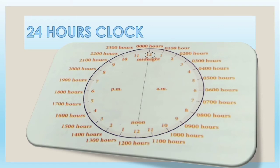In 24 hour clock, 12 midnight is written as 0000 hours or 2400 hours, which means the day is over. And 10 AM is written as 1000 hours. The first two digits show the hours and the next two digits show the minutes. So 10 is the hour and 00 is the minute. 5 AM is written as 0500 hours — 05 is the hour and 00 is the minute. And 5 PM is written as 1700 hours — 17 is the hour and 00 is the minute.